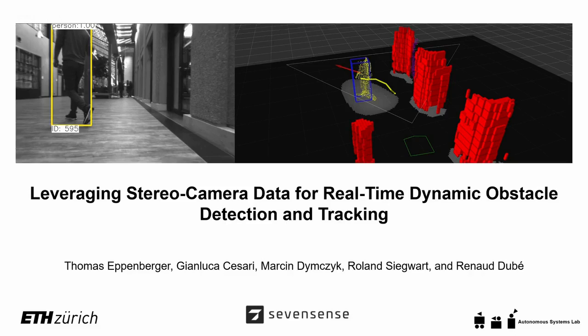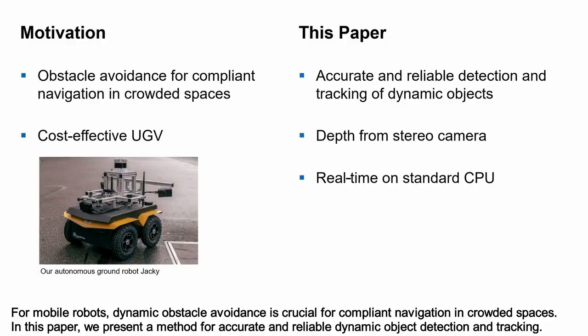This work is about leveraging stereo camera data for real-time dynamic obstacle detection and tracking. For mobile robots, dynamic obstacle avoidance is crucial for compliant navigation in crowded spaces.